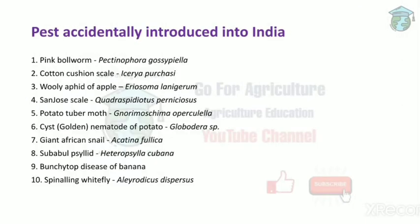Next, we will see the pests that are introduced in India. First is pink bollworm, Pectinophora gossypiella — introduced from Asia. Next, cotton cushion scale, Icerya purchasi, from Australia, and woolly aphid of apple, Eriosoma lanigerum, from China, introduced in the 18th century.